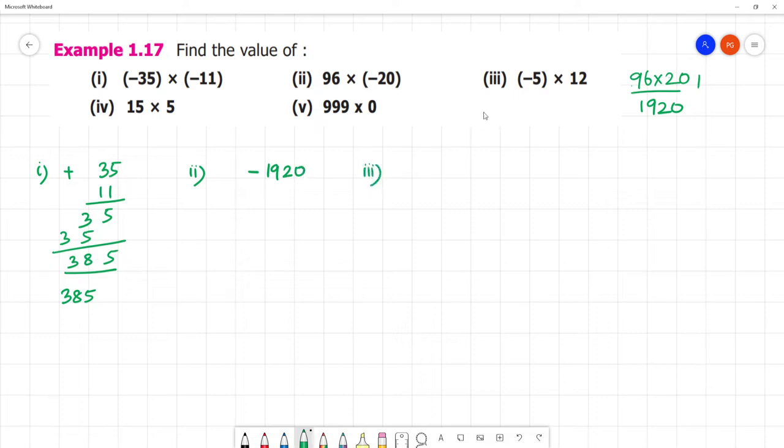Third one: minus. Minus into plus is minus. 5 into 12, answer 60. Next, fourth one. Plus into plus is plus. 15 into 5 is 75.